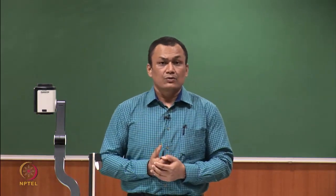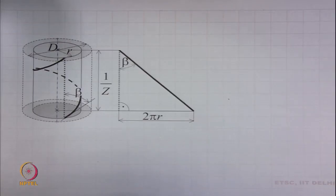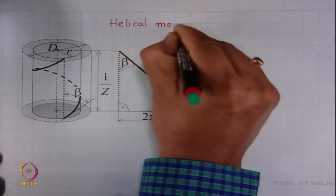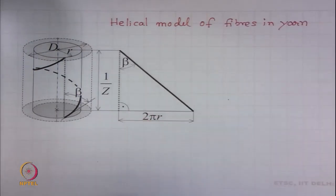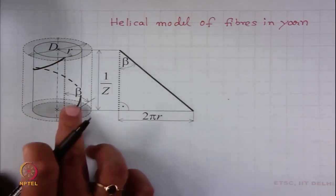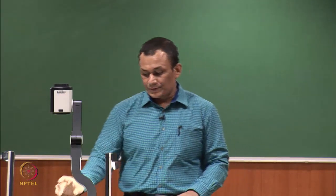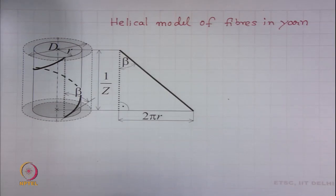We consider the helical model of fibers in yarn. It is a well-known concept often used in yarn modeling, discussed in detail in one of the earlier modules. A general fiber is situated at a strand radius r in the yarn and makes an angle beta from the yarn axis. If we cut the yarn along its axis and unravel it, we obtain a triangle whose base is 2πr and height is 1/z, where z denotes yarn twist and beta is this angle.